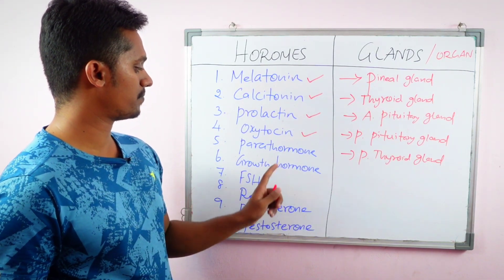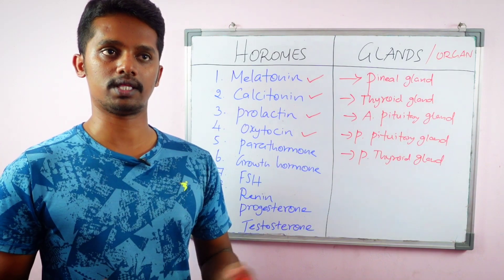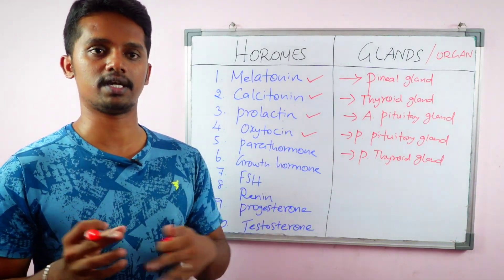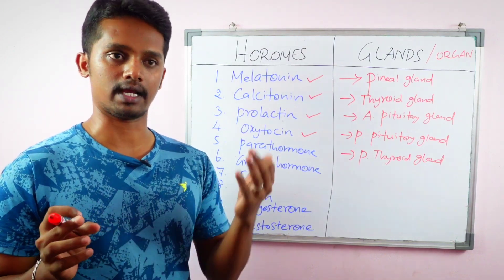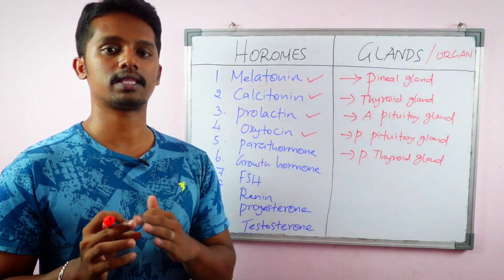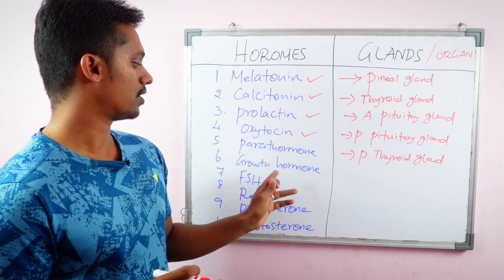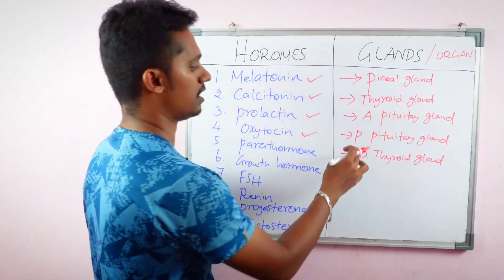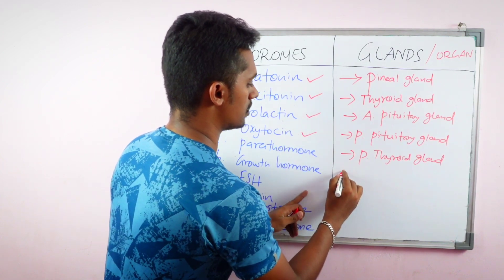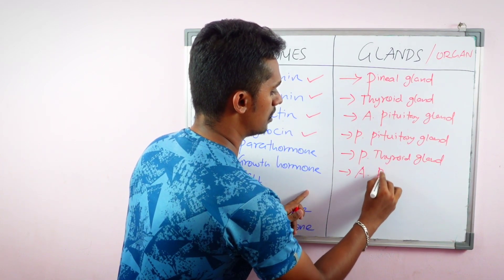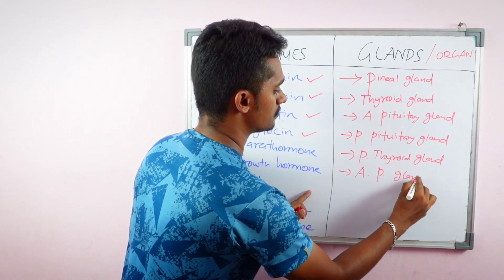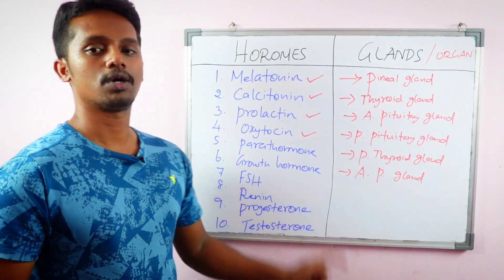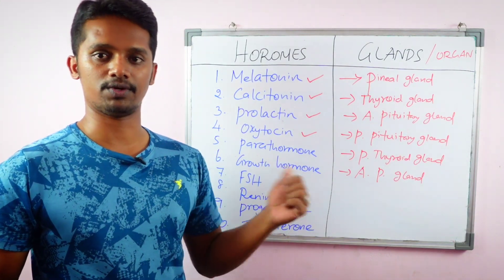The sixth hormone is Growth Hormone. Growth hormone is essential for overall body growth, except for a few parts like the eyes and the brain. Similar to Prolactin, it is secreted by the Anterior pituitary gland.